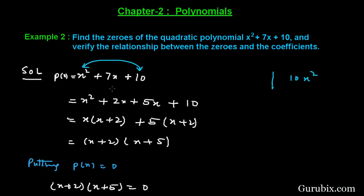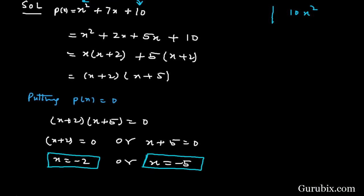We factorize the middle term into 2x and 5x. This means 2x plus 5x equals 7x, and 2x times 5x equals 10x squared, so our splitting of the middle term is correct. Now we take x common from the first two terms, giving x times (x plus 2), and take 5 common from the last two terms, giving 5 times (x plus 2). Then we take (x plus 2) common, giving (x plus 2)(x plus 5).